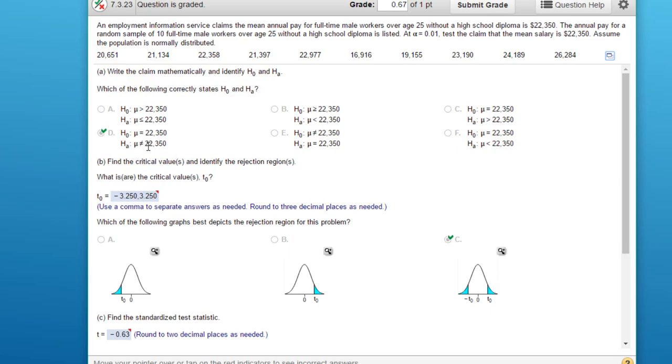Because we've got a not equal in the alternative, that tells us we have a two-tailed test. And I think that's the reason that you missed this problem there. You've got a value of 2.821 to minus 2.821. So let's check.